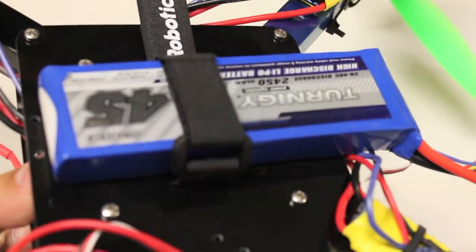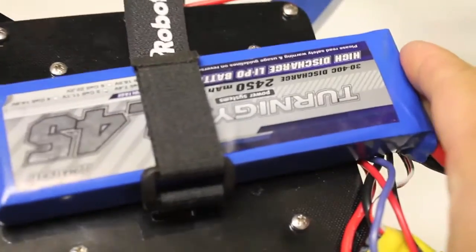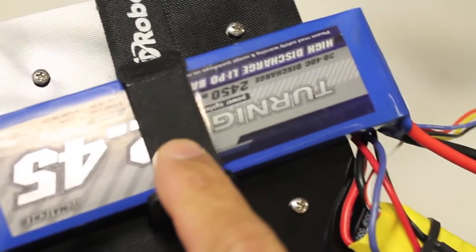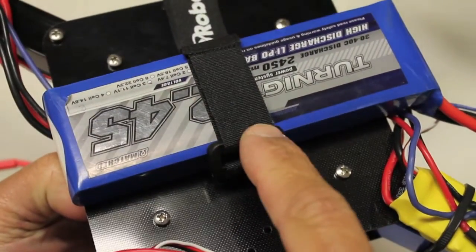And if you notice, underneath they have, as a lot of quads do, different mounting straps for your battery. And this is just a single strap mount that came with the Argicopter setup.